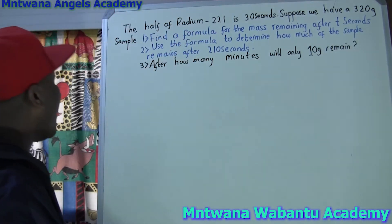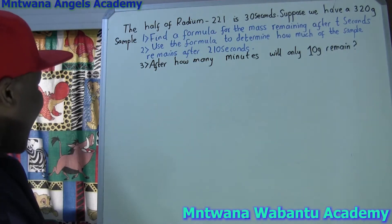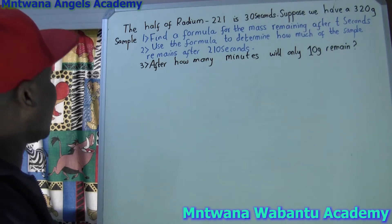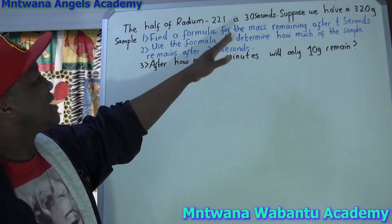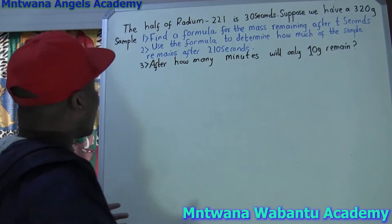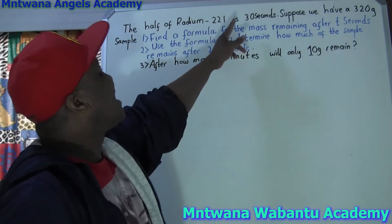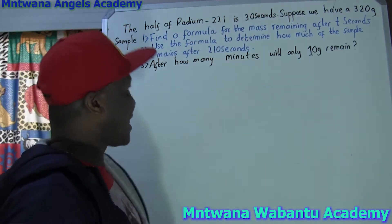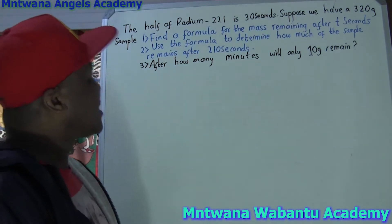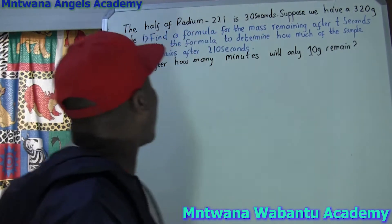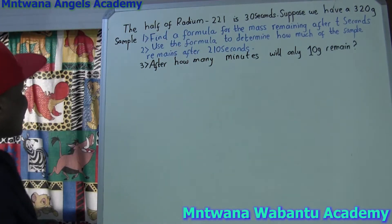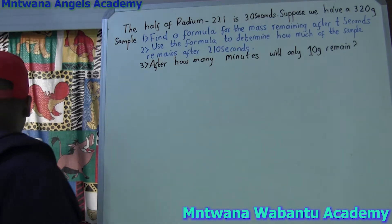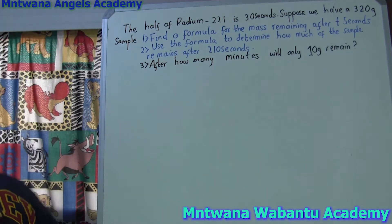I'll be more than happy to respond to your comments. Let's go to our problem. They say half of radium — this is a half-life equation. They say half of radium 221 in 30 seconds. Suppose you have a 320 gram sample.